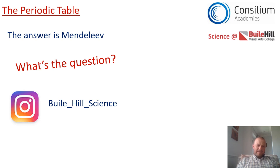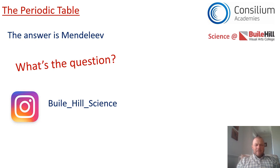If the answer to the question was 'red', the question could be: 'What colour means stop on traffic lights?' or 'What colour kit do Man United wear?' The answer to this question is Mendeleev — and what I'd like you to do is write me the question. Email it to your teacher or share it with us on Instagram on the Buell Hill Science Instagram page.